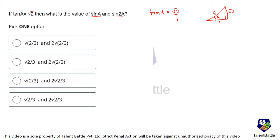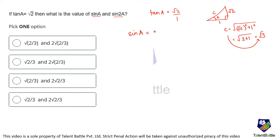The third side c is going to be the hypotenuse: under root of (2 squared plus 1 squared), which is root of (2 plus 1), that is root 3. So sin a equals opposite upon hypotenuse, which comes out to be root 2 upon root 3.